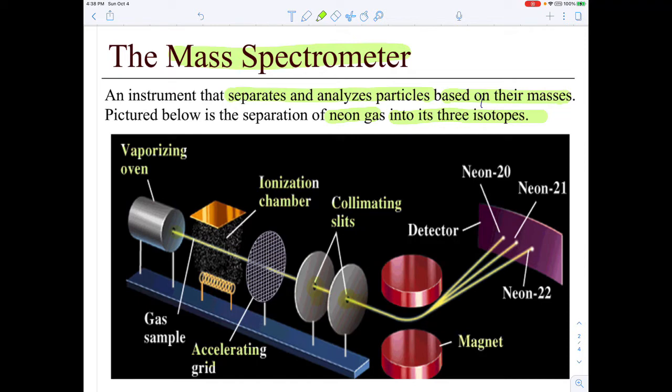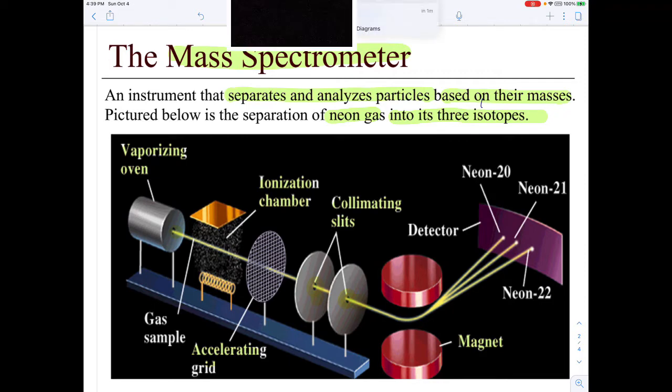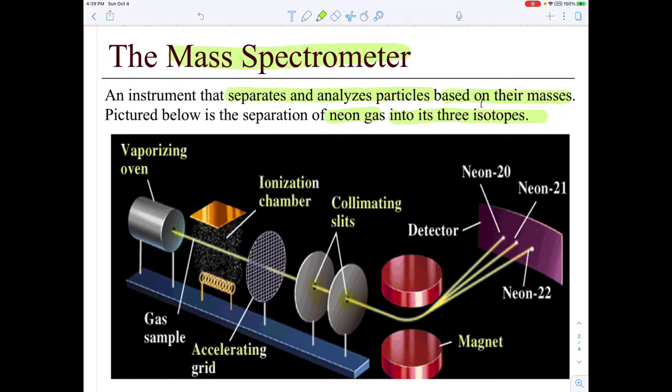So what we've done is created a narrow beam of neon atoms. We then pass those things through a magnetic field, a strong magnetic field, and it's kind of like taking a bunch of stones in a little sack, swinging it around your head, and throwing them. It's like a slingshot effect.